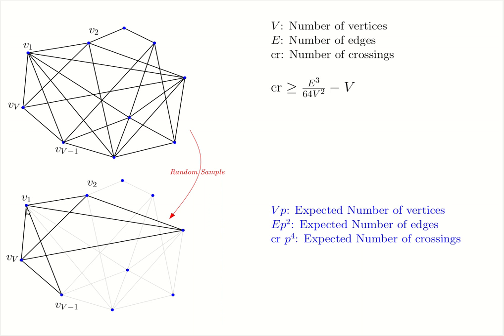The expected value is a linear function. And thus, we can add up the probability of v1 surviving times the fact that it survives, and same for v2. And if we calculate this for all the vertices, we'll get that the expected number of vertices is V times p. The same argument follows for the edges.